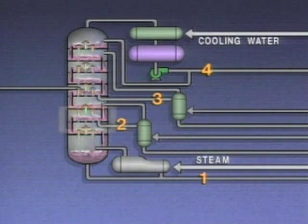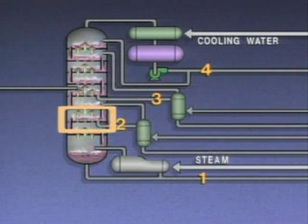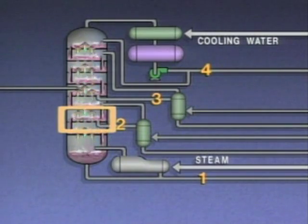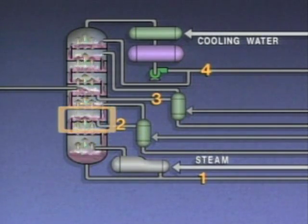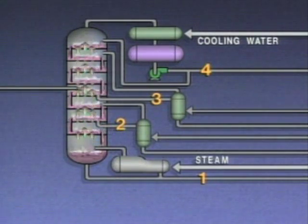If we move up the tower to the area where product two is drawn off, the temperature is lower than at the bottom of the tower. While there may be some overlap of products in this area, the concentration of product two is highest in the liquid drawn off at this point. If conditions in the tower are controlled properly, the concentration of each product is highest at its respective draw-off point.